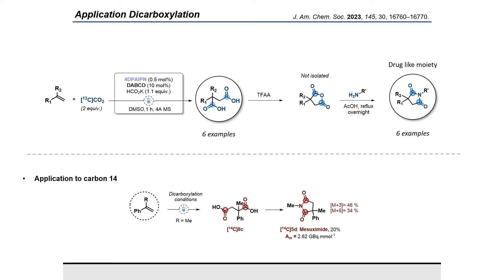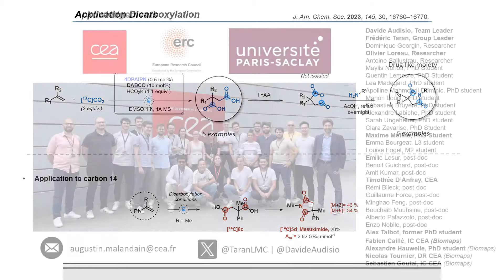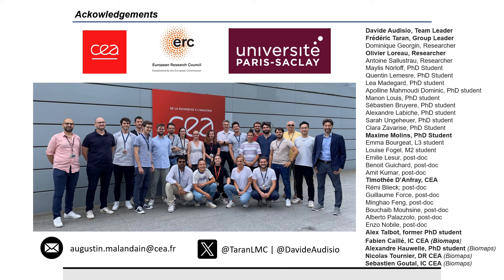Indeed, we managed to synthesize mesuximide, which is an anti-convulsant developed by Pfizer many years ago. We managed to synthesize it with a 20% overall yield, which is a moderate yield, but more especially with a very high molar activity of 2.62 GBq per mmol, which is in line with ADME studies, and even with quantitative whole-body autoradiography.